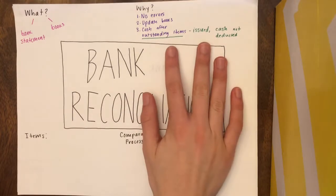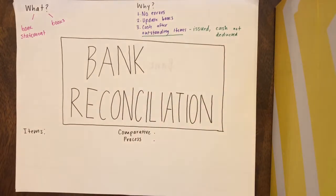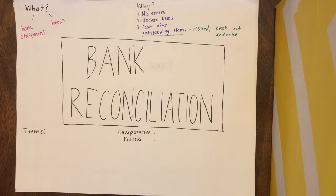What causes outstanding items to occur in accounting? The main reason for outstanding items to happen is because of timing differences. These timing differences may occur between the books and the bank statements or between the books and the actual bank. For example, one way that a timing difference can occur is if a check is issued by the entity but it has not been received by the other party because it is being sent in the mail.